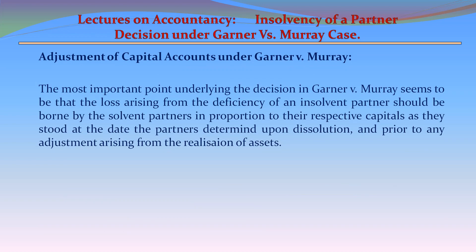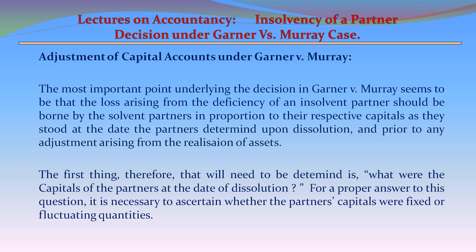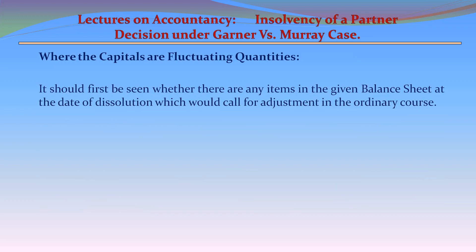The most important point underlying the decision in Garner vs. Murray is that the loss arising from the deficiency of an insolvent partner should be borne by the solvent partners in proportion to their respective capitals as they stood at the date of dissolution, prior to any adjustment arising from the realization of assets. Therefore, the first thing to be determined is what were the capitals of the partners at the date of resolution.